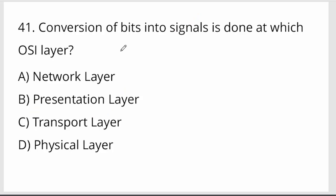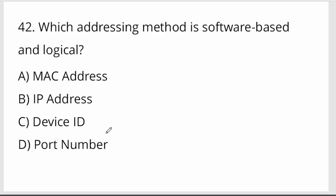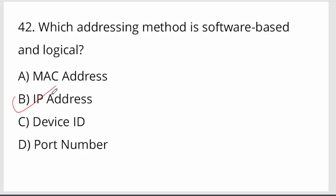Conversion of bits into signals is done at which OSI layer? That is the physical layer — the bottom layer. Which addressing method is software-based and logical? That is the IP address — Internet Protocol address.